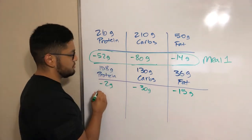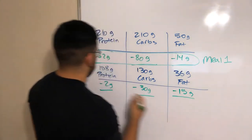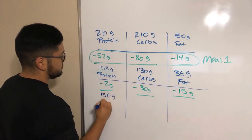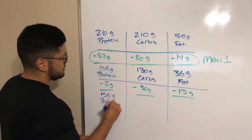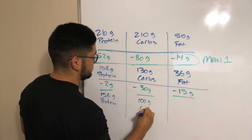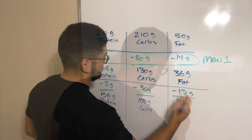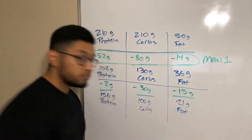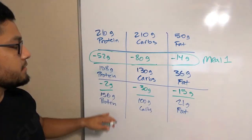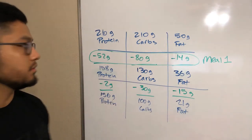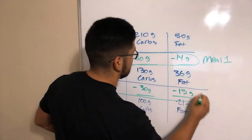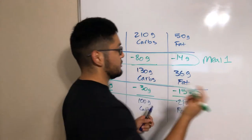So this would be 156 grams of protein left, 100 grams of carbs. Now we have 21 grams of fat left, 100 grams of carbs left, 156 grams of protein left. This was your snack, your dessert.